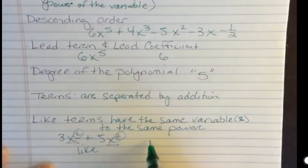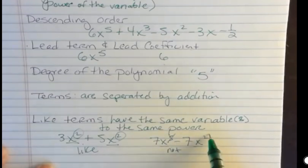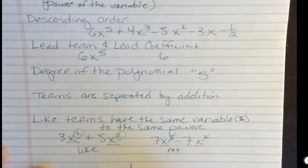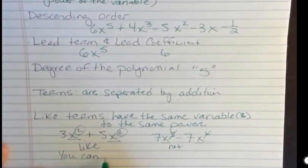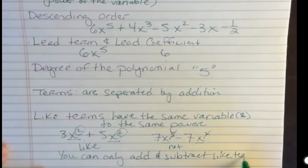But something like 7x to the 5th minus 7x to the 2nd are not like because they both have the x but they don't have the same power. It doesn't matter what the coefficient is. It matters what the variable is and what the power is. You can only add and subtract like terms. And that's an important thing to remember. If they're not like terms, you can't combine them.